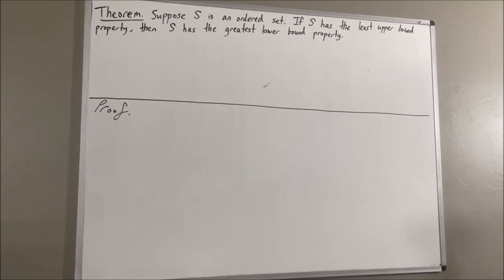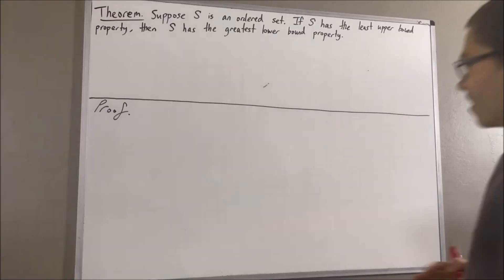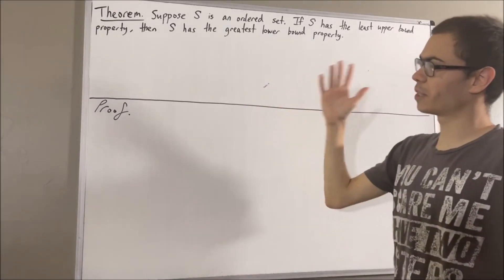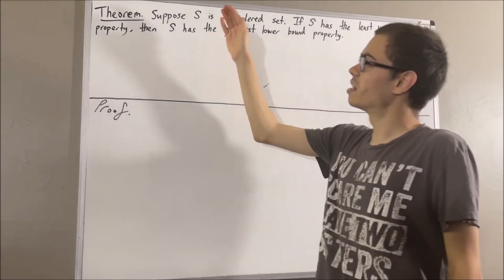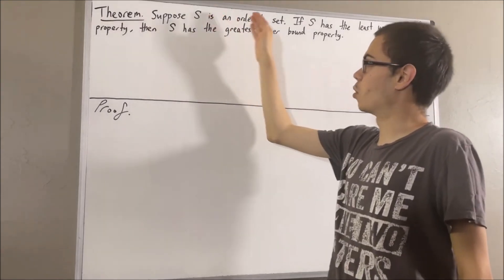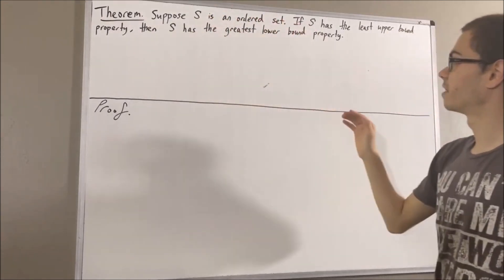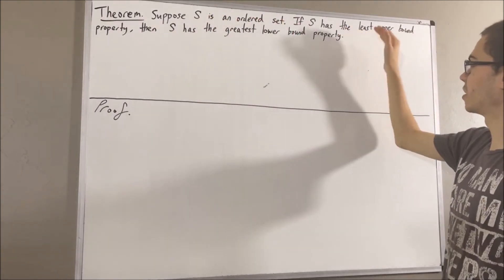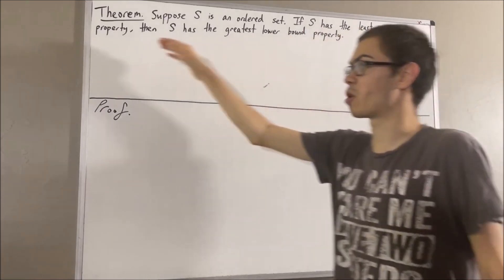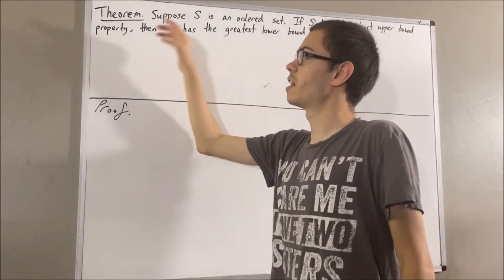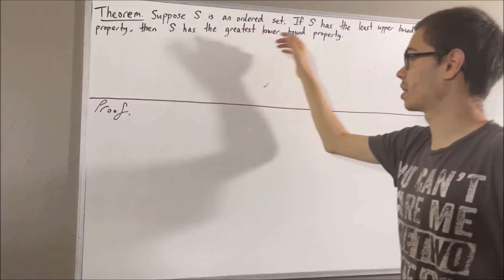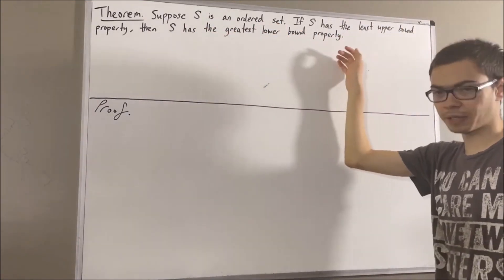Hello! In this video, we are going to prove the following theorem. Suppose S is an ordered set. If S has the least upper bound property, then S has the greatest lower bound property.